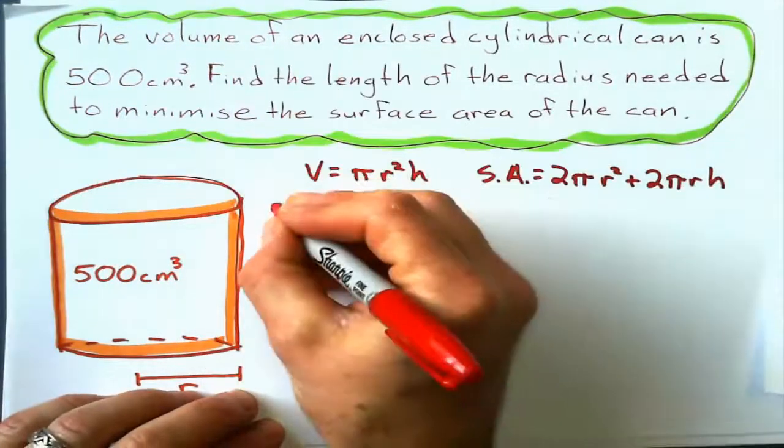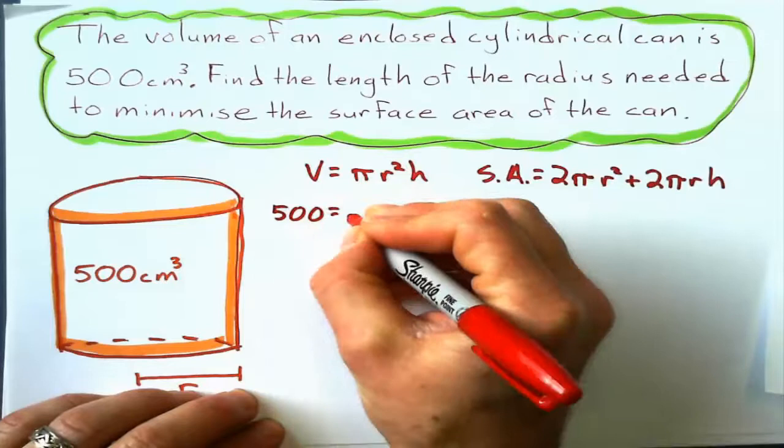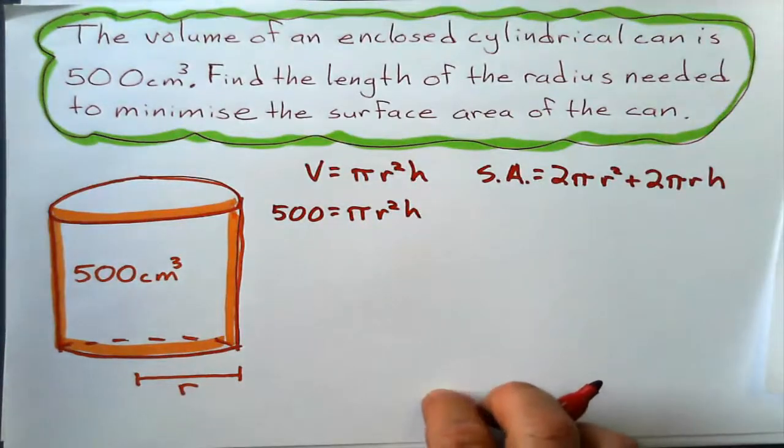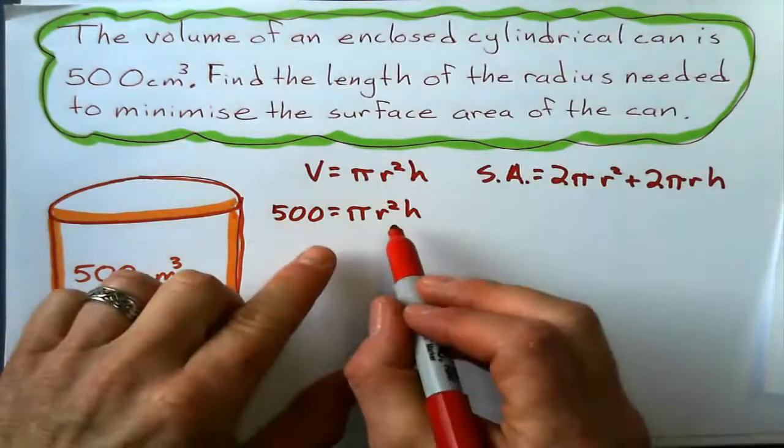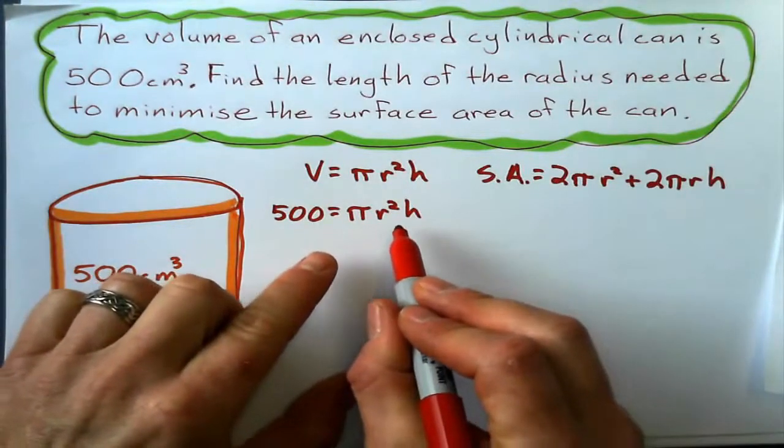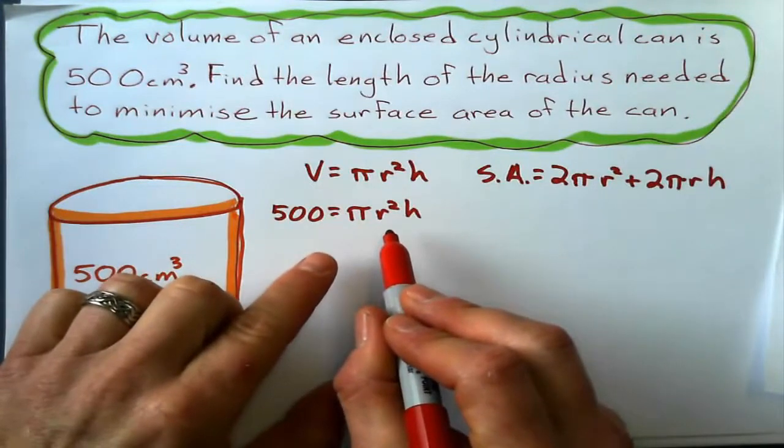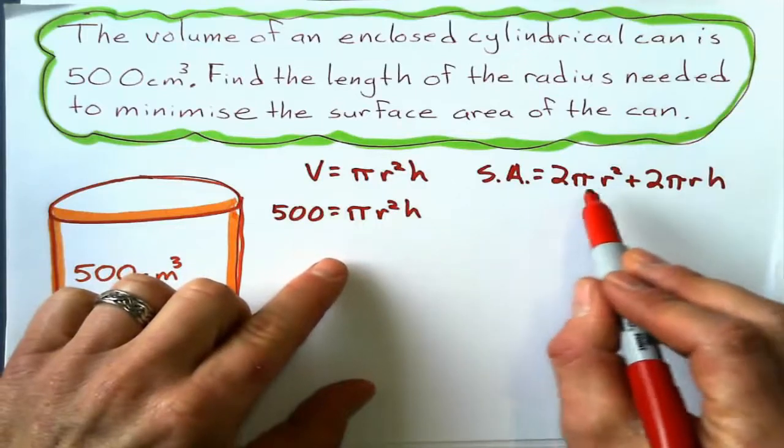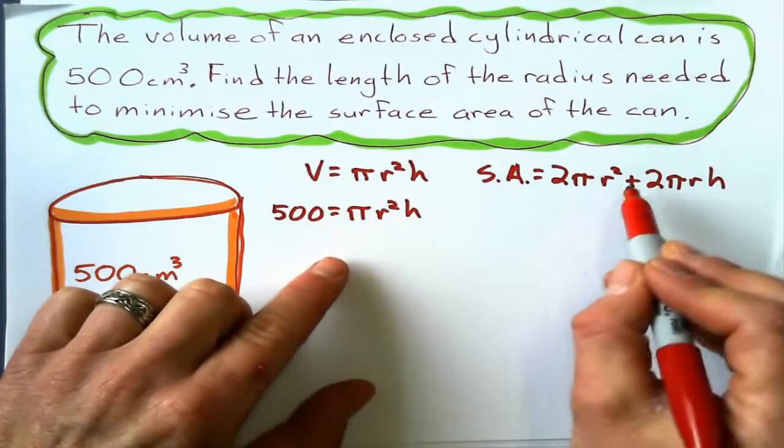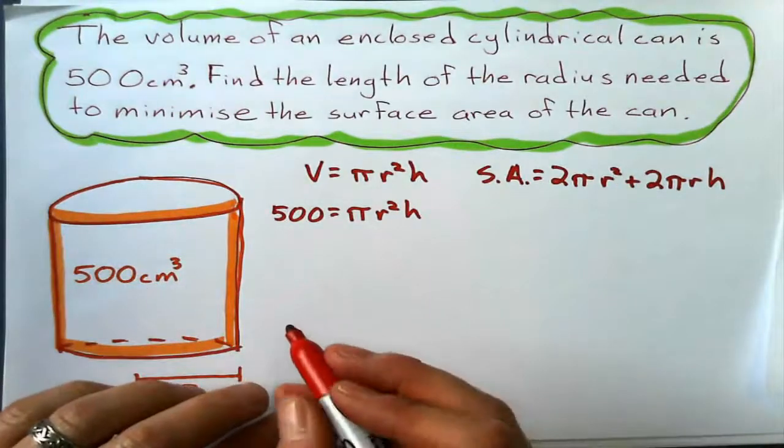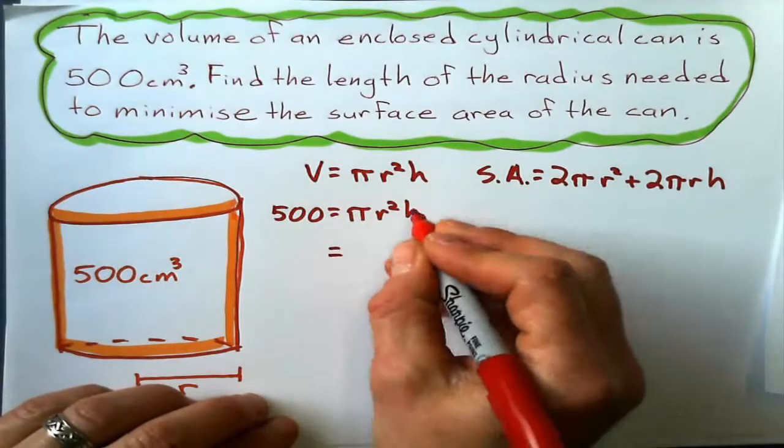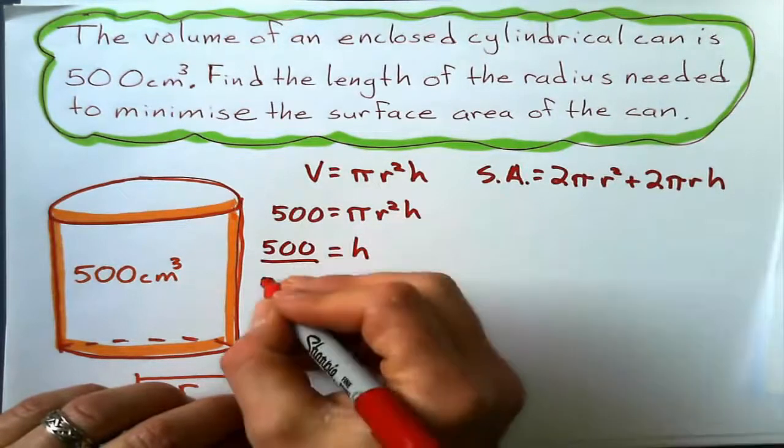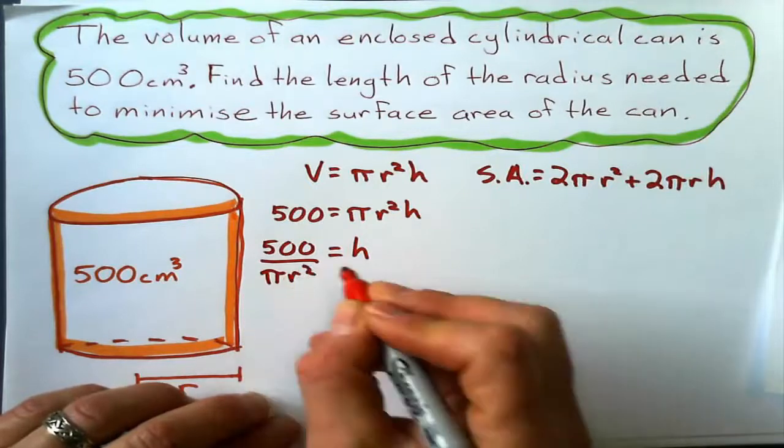So what we're going to do here, I know the volume is 500. I'm going to give you a practice one after this. And what I'm going to do, since this is an optimization problem, is I'm going to get h by itself. Remember, I want to minimize the surface area, so I'm not going to rearrange this formula here. I'm going to rearrange this one and substitute it in there. So I'll say, okay, I'll get the height by itself. 500 divided by pi r squared.